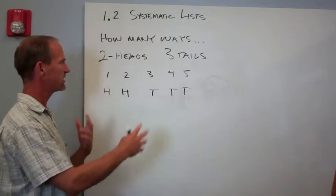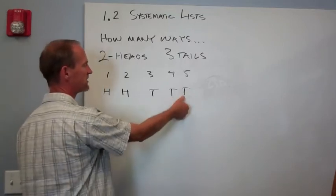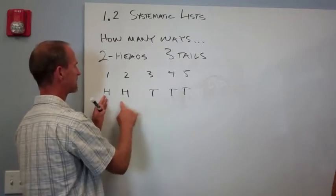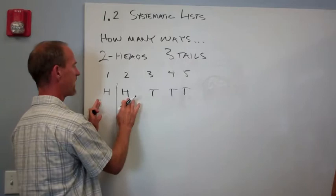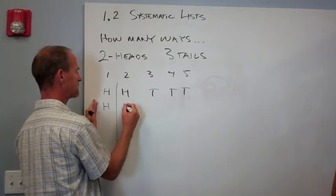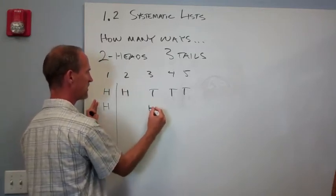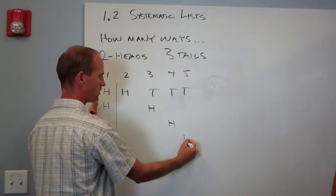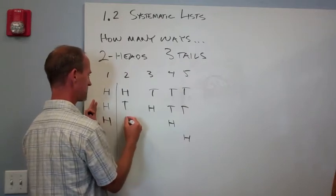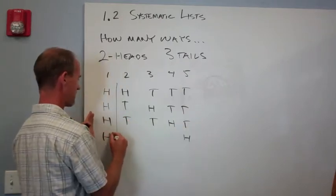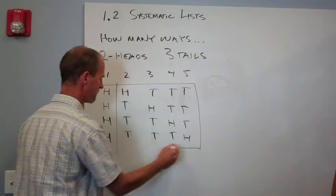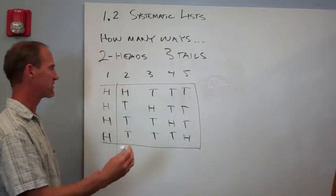Then I'm going to think about how can I change this and have it be different? If I change these tails, that's not going to be different. So I have to go back to my first different coin and think about how can these last four coins change? And so if this is a head, this head here in the two position could go here, or it could go here, or it could go here. And then the tails you can just fill in. So I've just counted right here four different ways that I can have two heads and three tails.